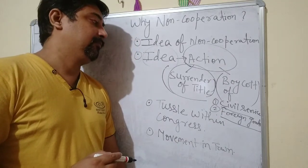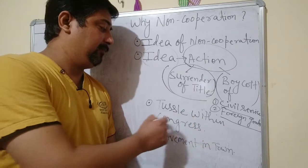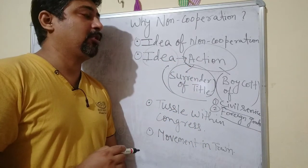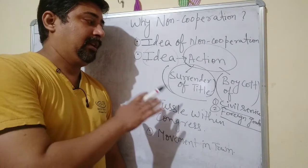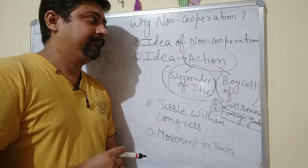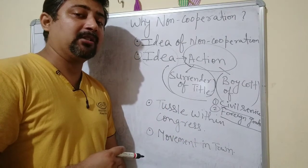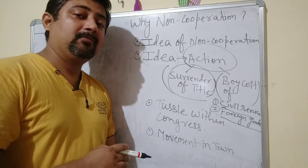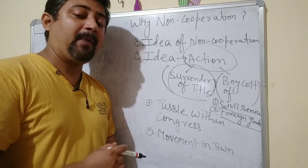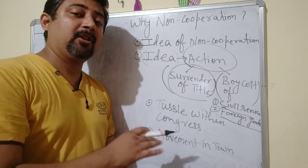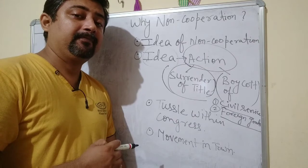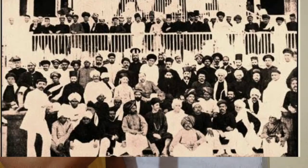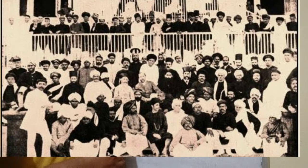But it was not a very easy task to translate the idea into action. There was a grave problem — a tussle within Congress regarding this program of non-cooperation. As per the act of 1909, Indians also got the opportunity to contest council elections. At that time, many Congress leaders were of the opinion that they should go inside the council or parliament and stop the laws, because the British were doing whatever they were doing by passing laws. Most Congress leaders thought it better to go inside parliament through elections.